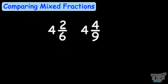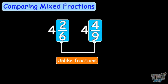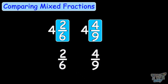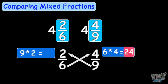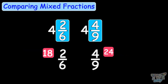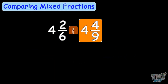Now which of these mixed numbers is bigger: 4 and 2 by 6, or 4 and 4 by 9? The whole parts are the same, so we will compare the fraction portions. But the fraction portions are unlike fractions with different denominators. We multiply the numerator of one with the denominator of the other: 6 multiplied by 4 is 24, and 9 multiplied by 2 is 18. We get a bigger product on this side, so the fraction 4 by 9 is bigger — and this mixed number with that fraction portion is the bigger number.